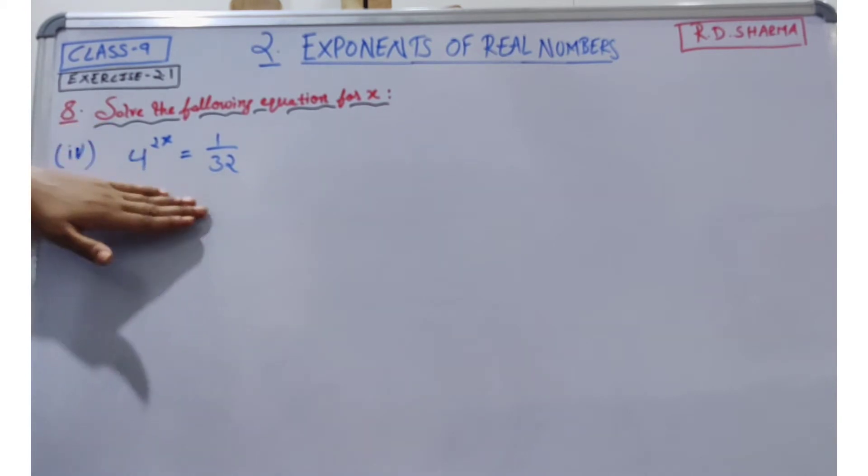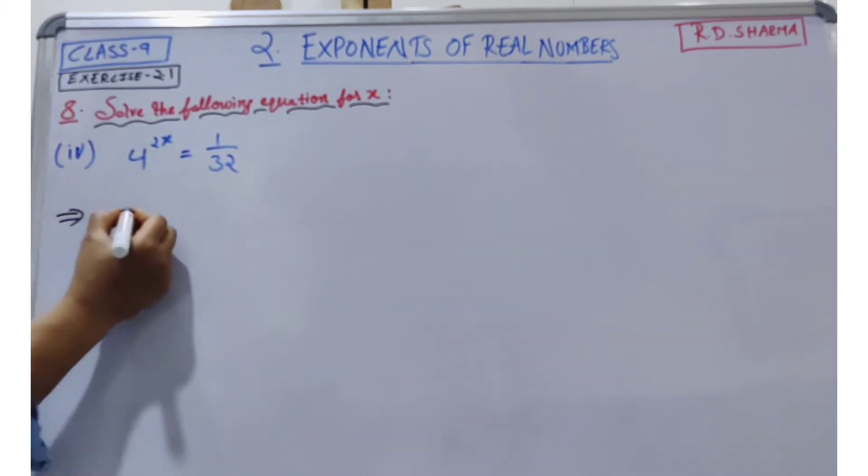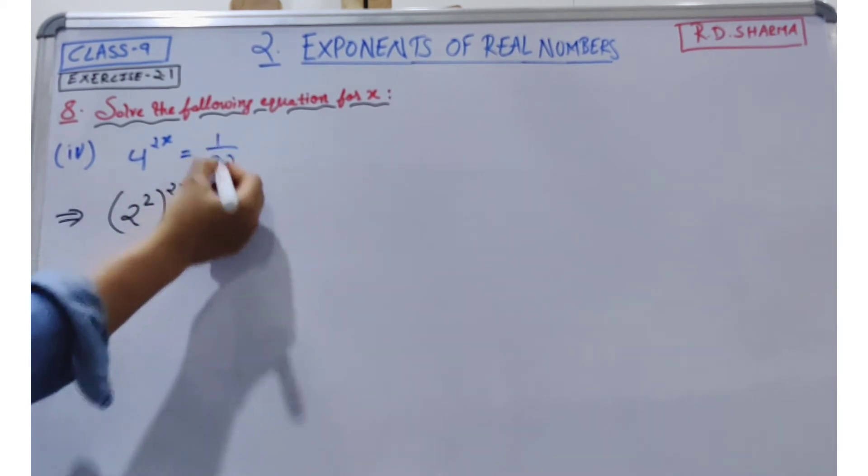In this type of question, our first work is that we can equate the base so that we can equate the terms. So how can we write 4 in the form of 2? 2 to the power 2. And 1 divided by 32.